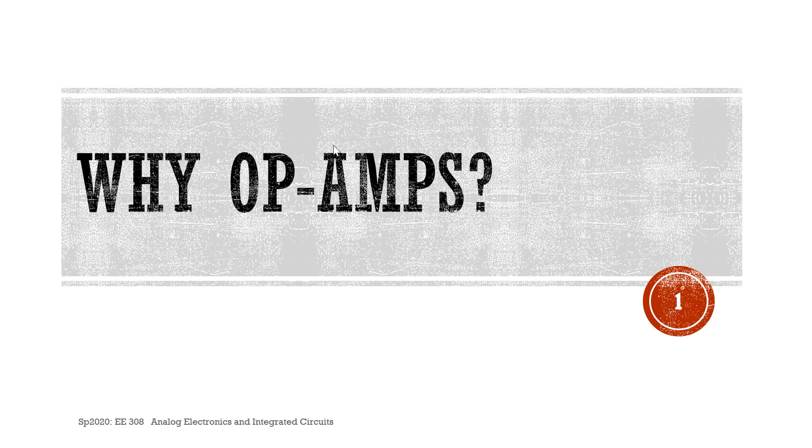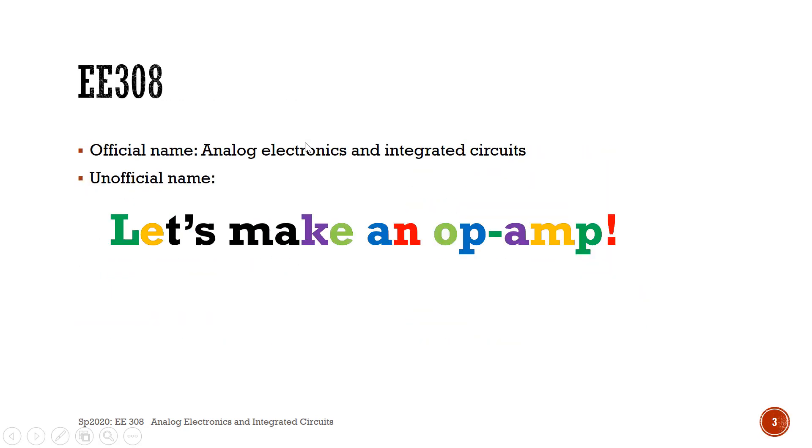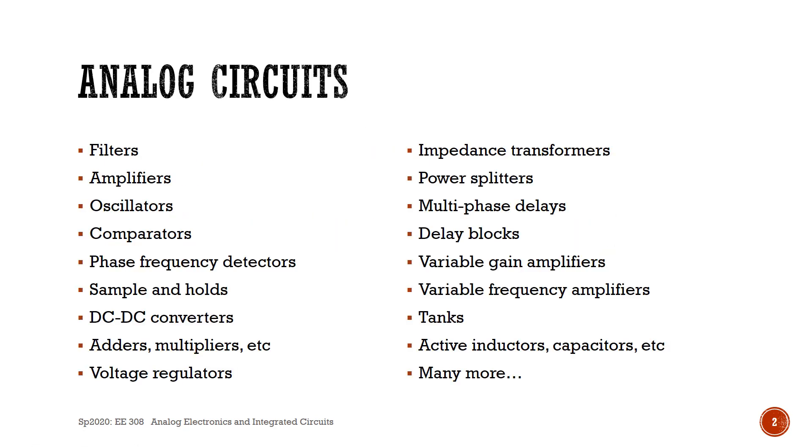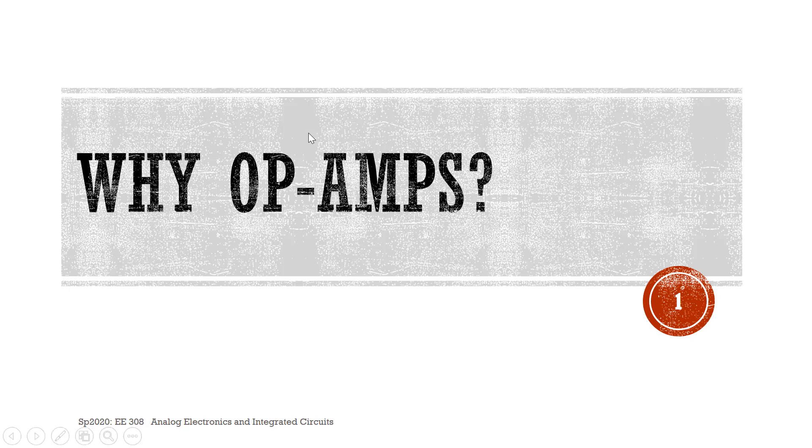The analog electronics is also kind of not really telling the whole story. If you actually looked into the content of the class, the name should actually be, 'Hey, let's make an op-amp.' It's really that's all we do. The entire quarter is about how to make an op-amp. So why is that? Why op-amps? Why do we have a whole quarter just on op-amps?